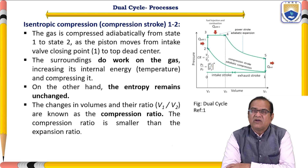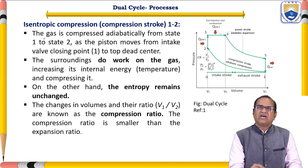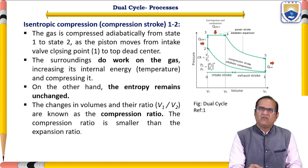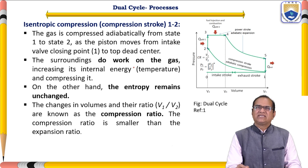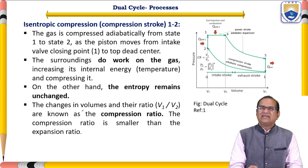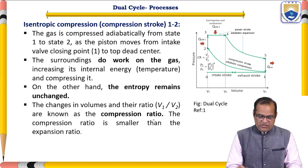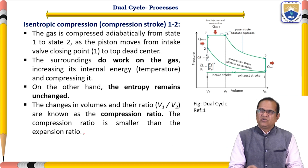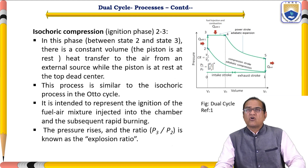Process one to two is isentropic compression. The gas is compressed adiabatically from state one to state two as the piston moves from the intake valve closing point to top dead center. The surroundings do work on the gas, increasing its internal energy and temperature. The entropy remains unchanged. The ratio V1 by V2 is known as the compression ratio, which is smaller than the expansion ratio.